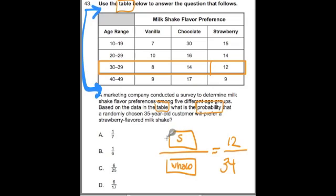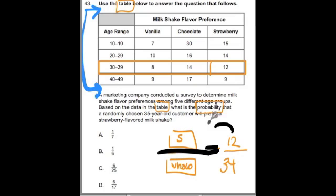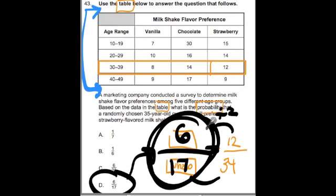Is 12 out of 34 my answer? It is an answer, but I have to reduce it. What can I divide 12 and 34 by? I can divide both by 2 — 12 divided by 2 is 6, and 34 divided by 2 is 17. So the answer is D: the fraction reduced to lowest terms is 6/17.